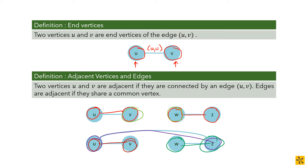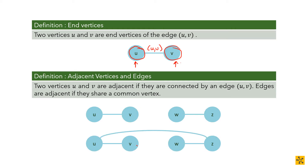Edges are adjacent if they share a common vertex. Unlike with vertices where the relationship is that connecting line, for edges it's just that they share a vertex. For example, you are friends with Bob and Bob is friends with Mark — your relationship with Bob is adjacent to Mark's relationship with Bob, because Bob is a common factor. So an edge is adjacent if they share a common vertex.